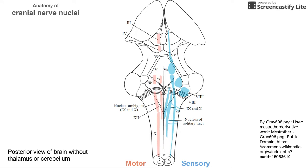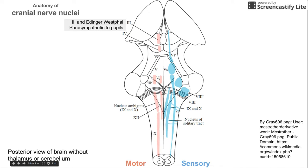At the very top here, the most superior point, is the cranial nerve three nucleus. There are two nuclei in this section. The uppermost one is the Edinger-Westfall nucleus, which sends parasympathetic innervation to the pupils for constriction. Both nuclei in this section belong to cranial nerve three — the lower half of that red shaded region covers the other functions of cranial nerve three, which are ocular motor functions.